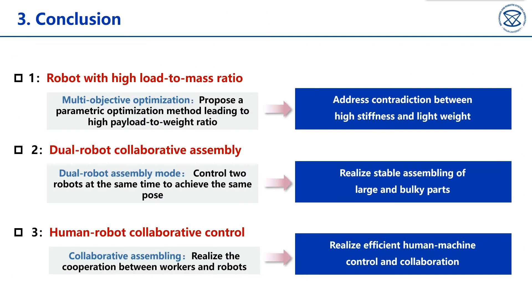The contributions of our work are of three parts. Through multi-objective parametric optimization, the contradiction between large load capacity and lightweight is solved. By controlling two robots at the same time, stable pose adjusting of large and bulky parts is realized. Efficient assembling inside the cabin is achieved by the human-robot collaboration.